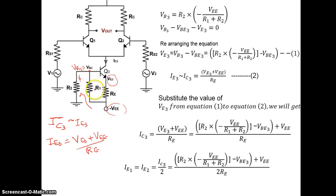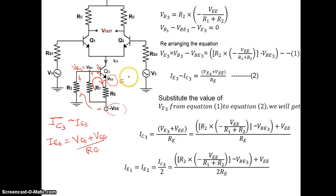Applying KVL in this loop: VBE3 for the NPN transistor — base is positive, emitter is negative — so we have plus to minus VBE3, then minus VE3, the voltage across Re, equals zero. Rearranging, VE3 equals VB3 minus VBE3.